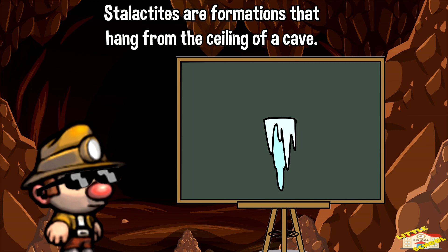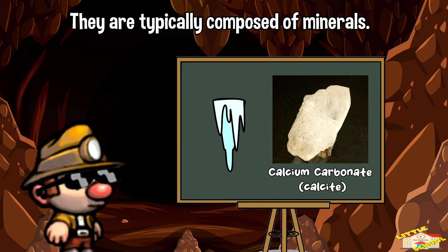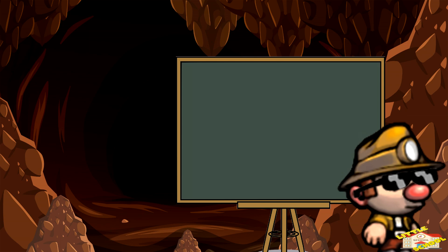Stalactites are formations that hang from the ceiling of a cave. They're typically composed of minerals, with calcium carbonate being the most common.